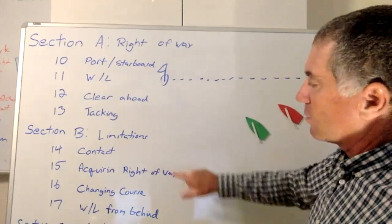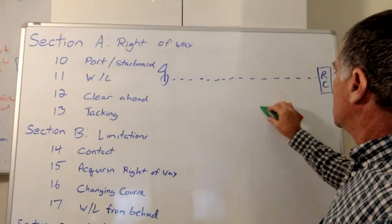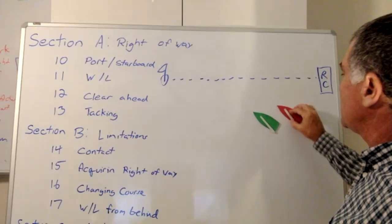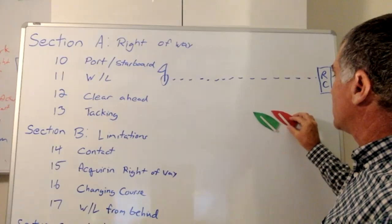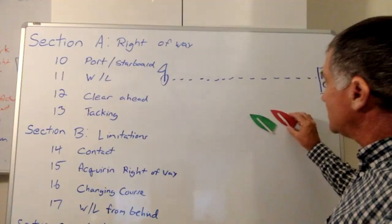And by the way, just our definition here, you start your tack when you cross head to wind, and then when you're on close self course. So if you never finish your tack, you're still tacking and you have no rights. So I got to make sure I finish my tack. And by the way, that doesn't mean I have to have my sail in and trimmed. I just got to be on the close self course. And there's some judgment there on what really is close self course, but you kind of get the idea.